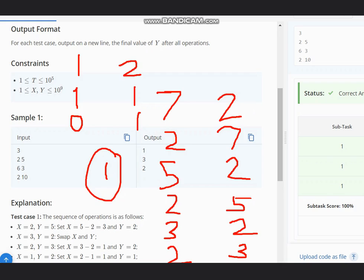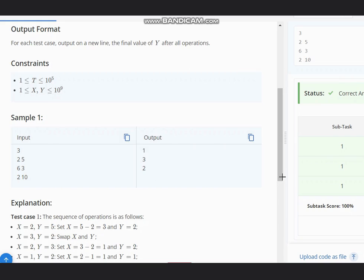Now if you observe this whole algorithm carefully, what we are doing is actually the GCD. Simply the GCD. You are taking the GCD of X, Y, and that is your answer.